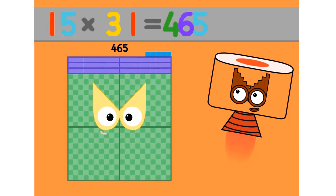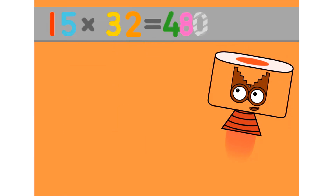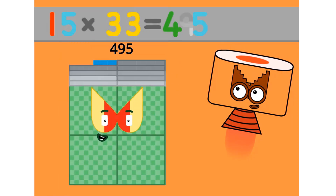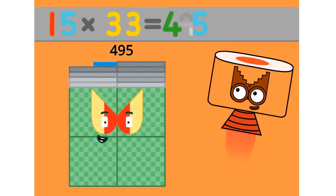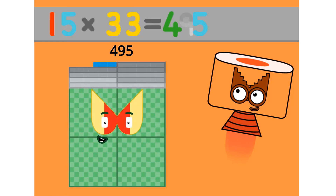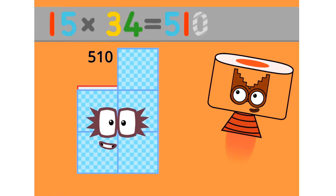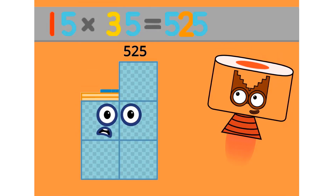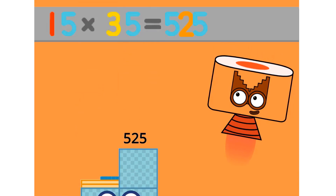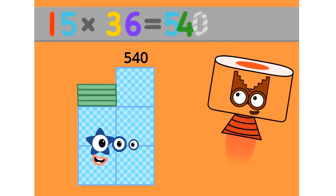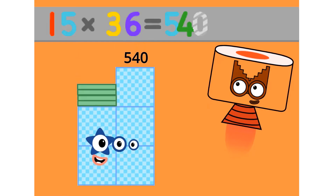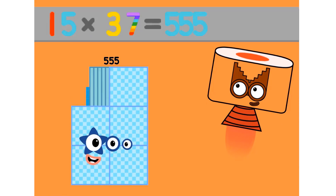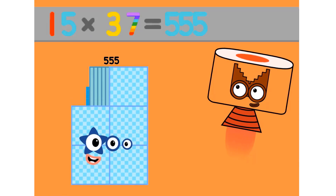15 x 28 equals 420. 15 x 29 equals 435. 15 x 30 equals 450. 15 x 31 equals 465. 15 x 32 equals 480. 15 x 33 equals 495. 15 x 34 equals 510. 15 x 35 equals 525. 15 x 36 equals 540.